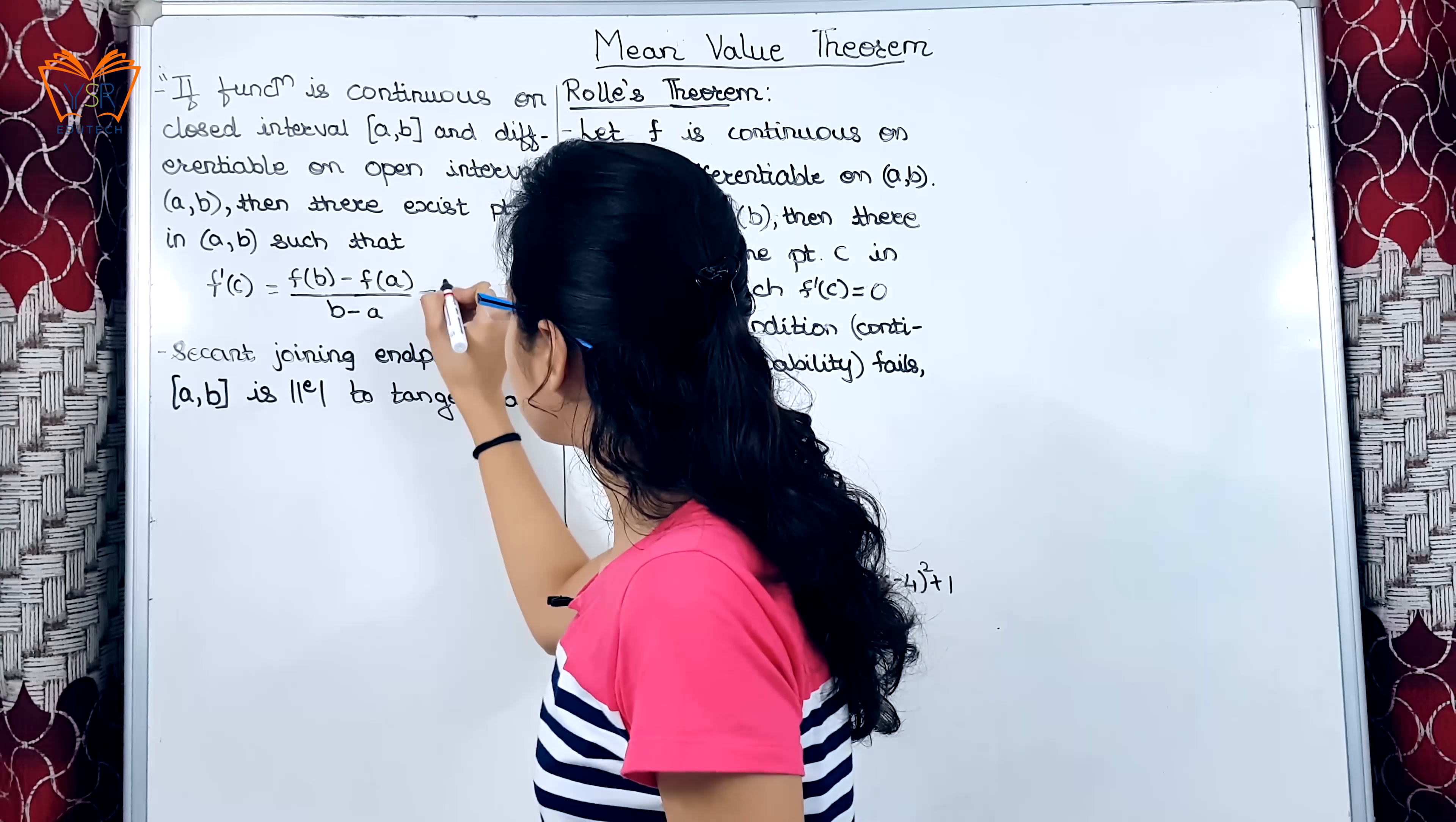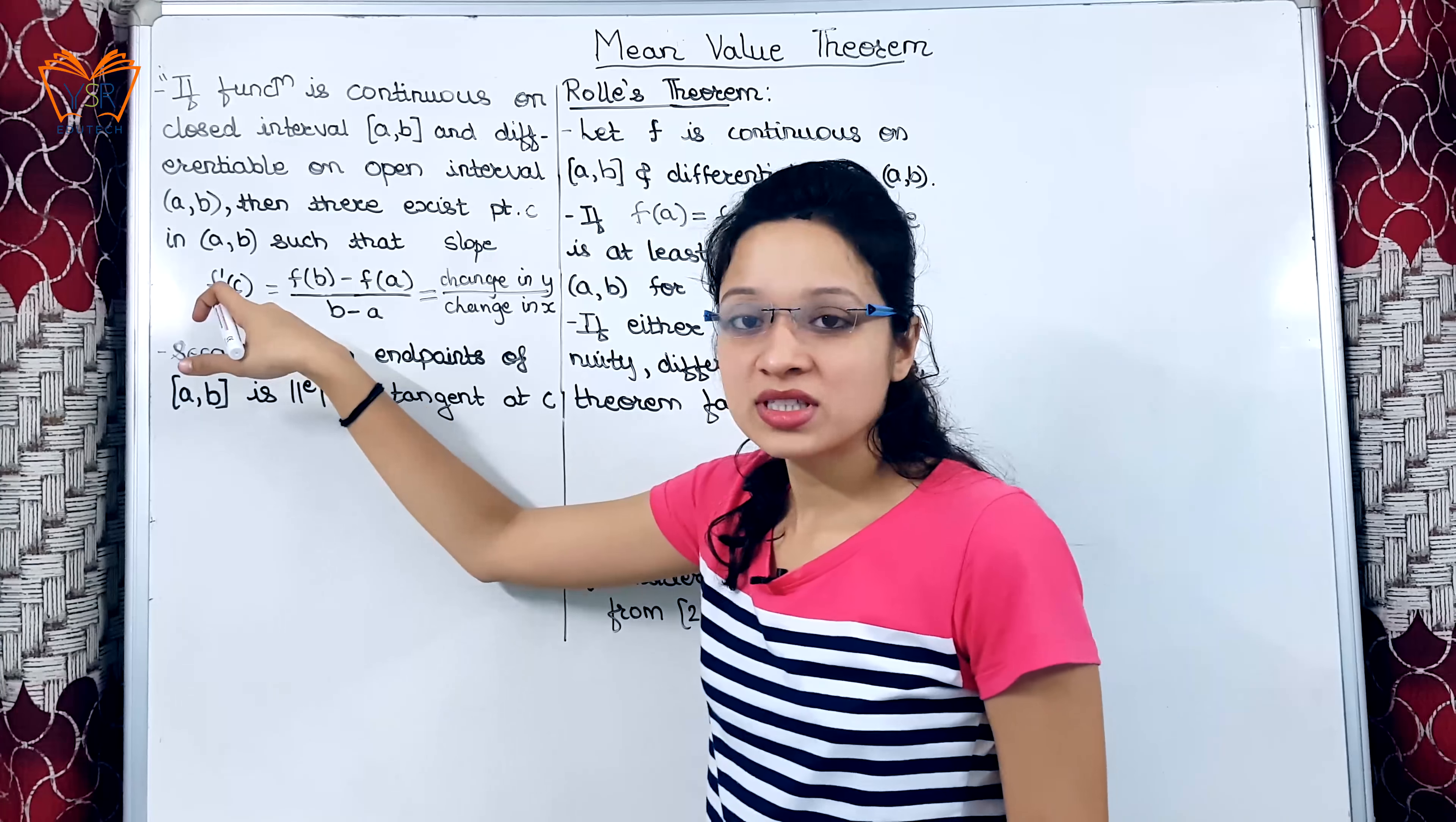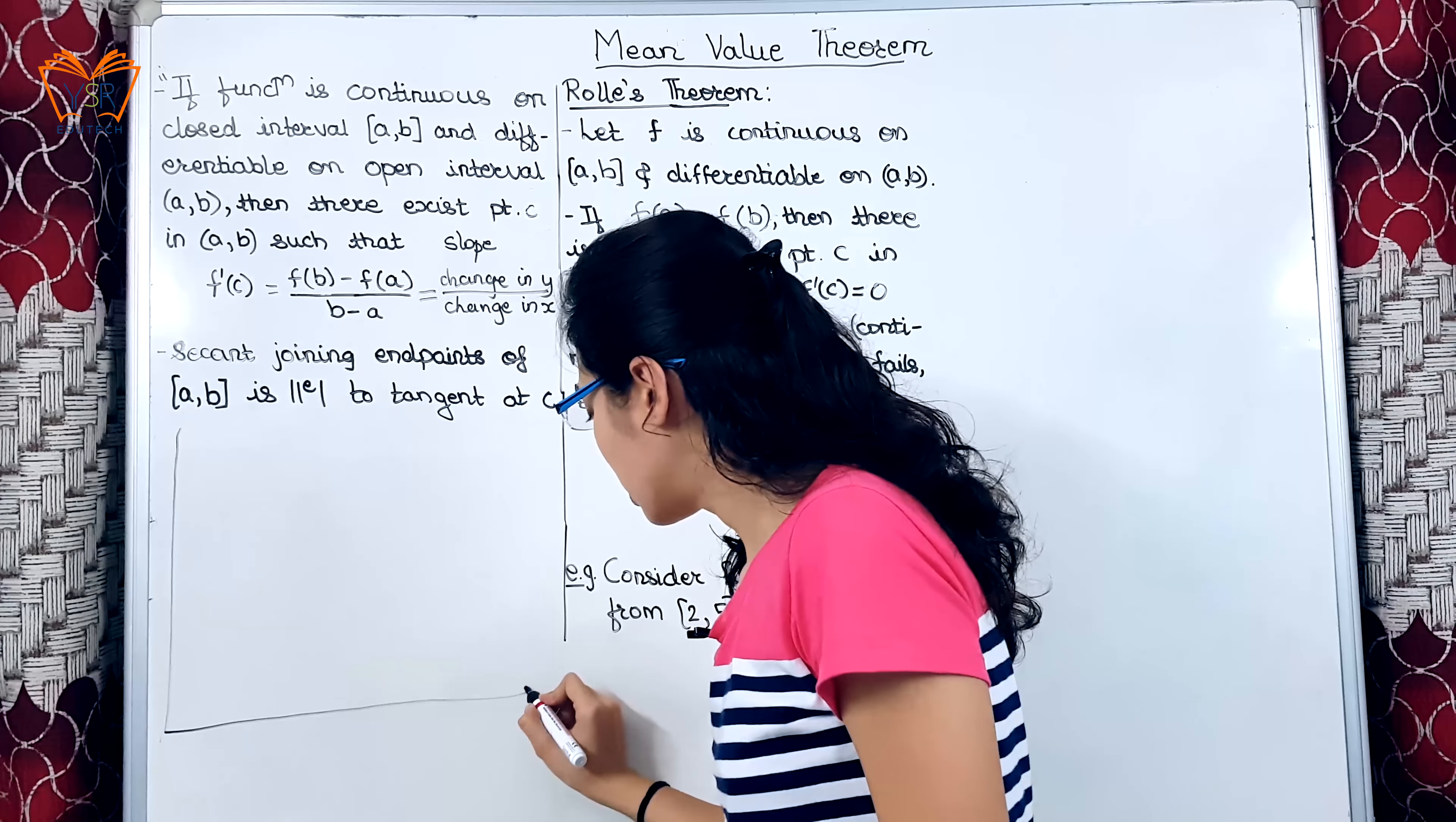The RHS part simply says it is change in y divided by change in x and we know that this is nothing but slope. So, we can say slope at point c is equal to the slope that joins the points a and b. This is nothing but secant joining endpoints of [a,b] is parallel to the tangent at c.